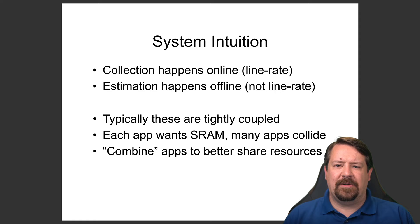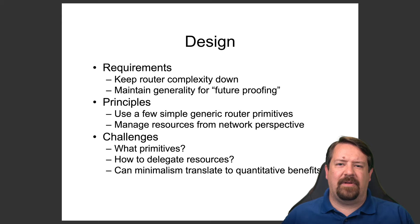Some of the benefits of this approach are that it would keep router complexity down, and if done in a really smart way, it could also help future-proof the router hardware design. However, this is easier said than done. The key questions are: what primitives should be tracked to support multiple applications equally well, and assuming there are multiple primitives, how should resources be allocated across them?